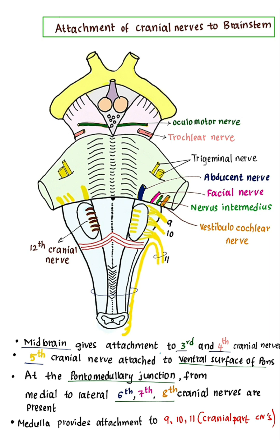The brainstem consists of 3 parts, from above to below: midbrain, pons, and medulla oblongata.